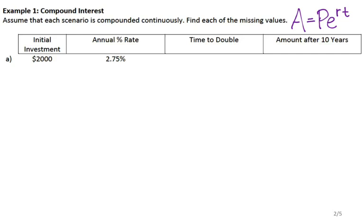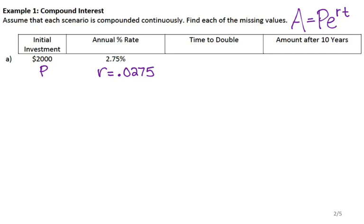Looking at this table, 2000 is the initial investment, so that's P. The 2.75% is R, but I'm going to change it to a decimal, so that's 0.0275. What I want to do is find the time it takes for that amount to double, as well as the amount after 10 years. I'll set up my formula: A equals 2000 times e to the 0.0275T.